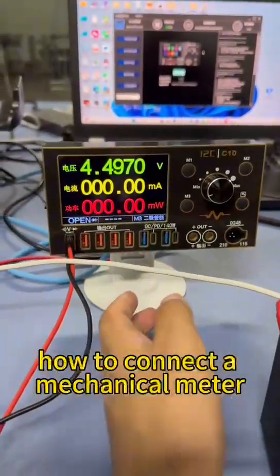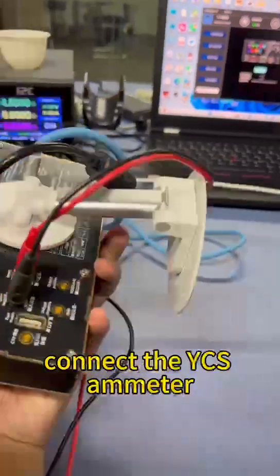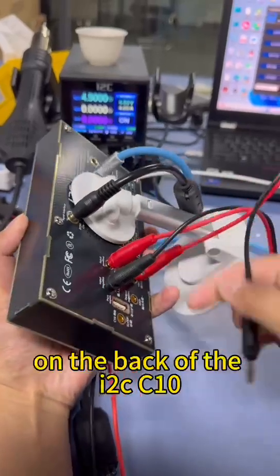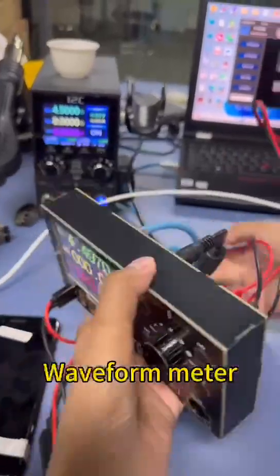How to connect a mechanical meter. Connect the YCS ammeter to the banana head output interface on the back of the I2CC10 waveform meter in parallel.